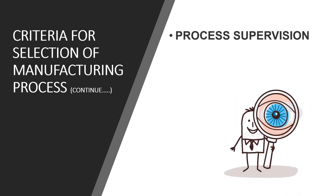Processes are always divided into several steps, and each step is monitored by a specialist. If a process requires more steps to manufacture a product, it requires more supervision, which consumes more manpower, and ultimately the cost of the product increases.